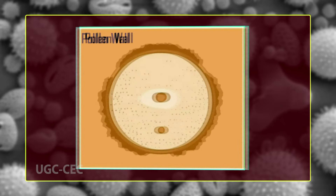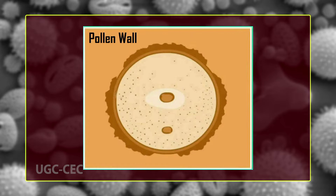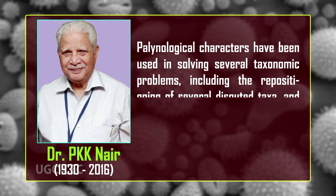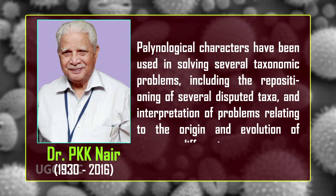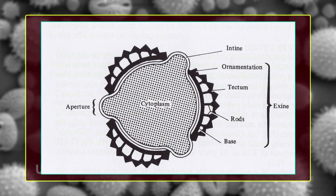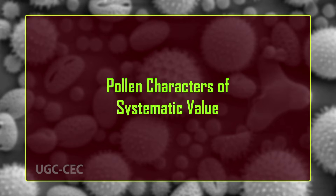Pollen wall has been a subject of considerable attention for the study of the evolutionary history of angiosperms. Nair in 1974 stated that palynological characters have been used in solving several taxonomic problems, including the repositioning of several disputed taxa and interpretation of problems relating to origin and evolution of different groups. Haywood in 1967 went so far as to state that exact details of pollen are such that they can be used in plant identification much in the way that fingerprints are used for the identification of criminals.